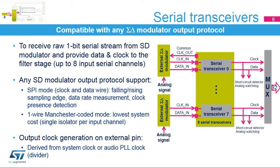Serial transceivers provide the connection to the external sigma-delta modulator. SPI mode works up to 20 MHz, or the DF-SDM clock divided by 4. There are configurable options including sampling edge detection, data rate measurement, and clock presence monitoring. One-wire Manchester-coded mode, where clock is recovered from the data, works up to 10 MHz, or DF-SDM clock divided by 6.